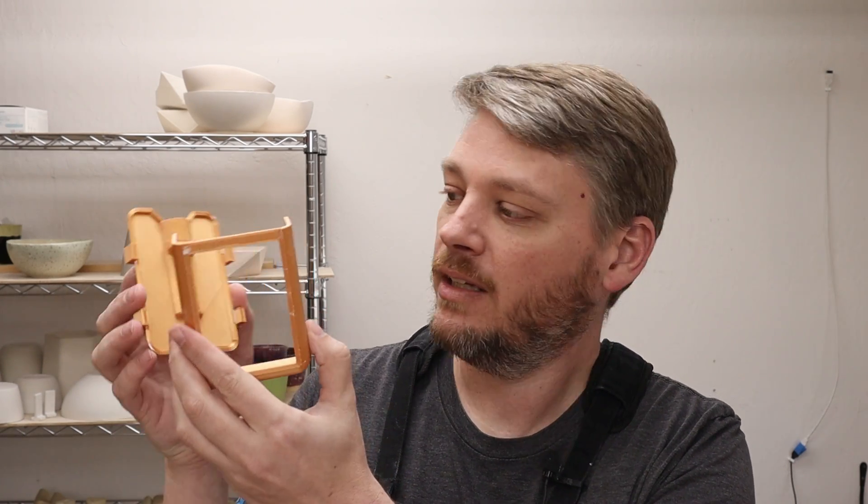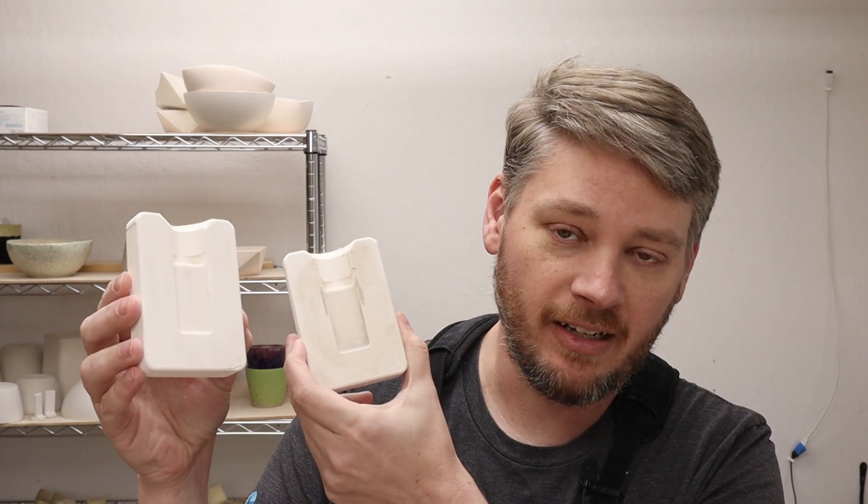I made this mold here. I didn't account for the shrinkage and I forgot to put the little nubs on it so the plaster pieces didn't align. But I was able to get this mold for a test tile out.